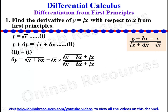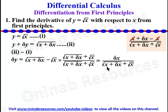And from here x minus x, so x goes with this x, and we'll be left with delta x over root x plus delta x plus root x.